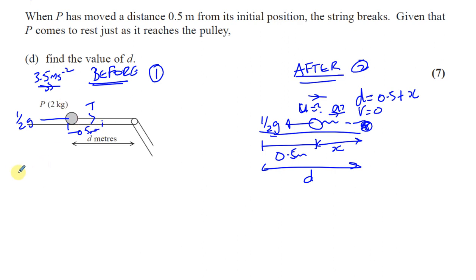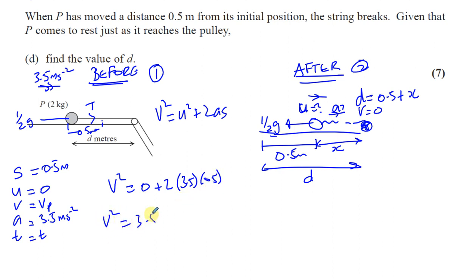So we know basically S, U, V, A, T. What do we know from those things? Well, we know it's traveled 0.5 meters. We know the initial speed was 0. The final speed, we can find it. The acceleration we worked out was 3.5 meters per second squared in the initial part. So we can use V squared equals U squared plus 2AS. So we can say V squared is equal to 0 squared plus 2AS. So it's 2 times 3.5 times a half, which basically gives us 3.5. So V is equal to the square root of 3.5 meters per second. So that's V.